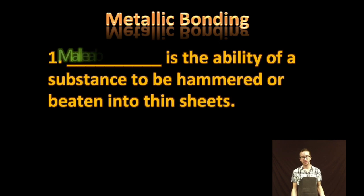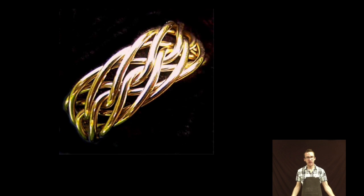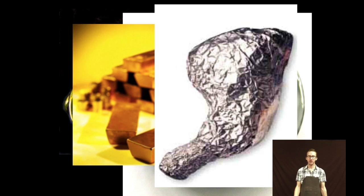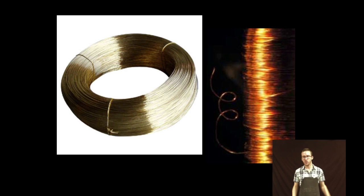So metals are typically very malleable, which is the ability of a substance to be hammered or beaten into thin sheets — think aluminum foil as a great example of malleability. Ductility, on the other hand, is the ability of a substance to be drawn or pulled through a small opening to produce a wire, like copper wire. Again, all due to the electron sea model that we find in metallic bonding.